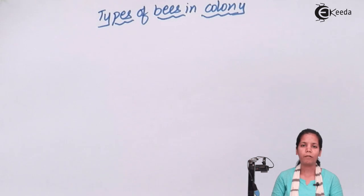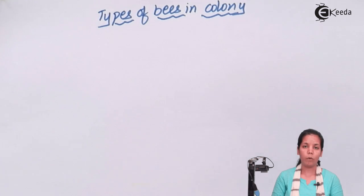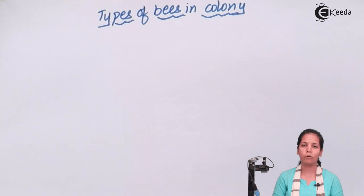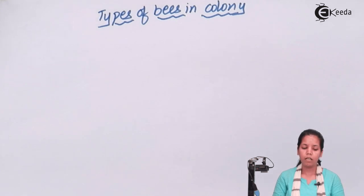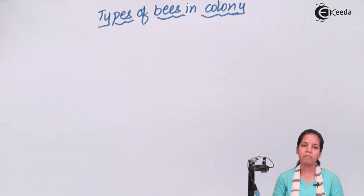Firstly, we talk about the queen bee. The queen bee is basically the one that lays eggs. It is always fertile and is the one that does not do any work. They are also the ones that give directions to different kinds of bees. They develop gametes or eggs which will be fertilized by the males.